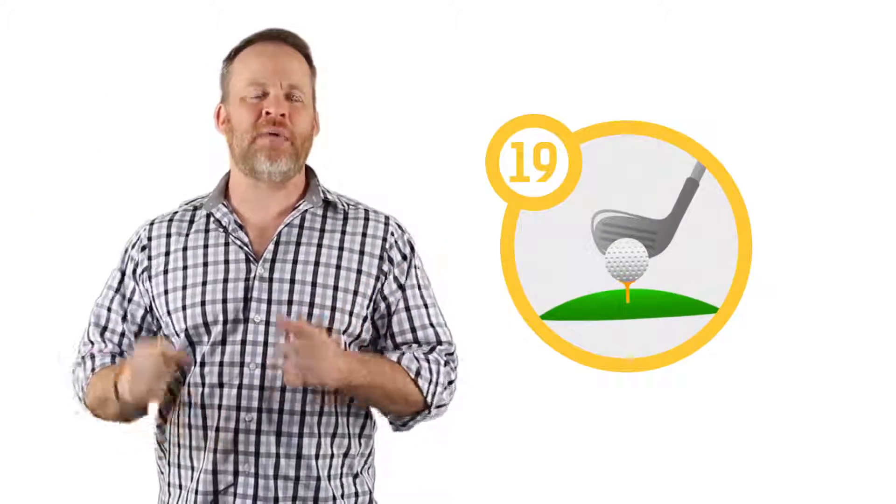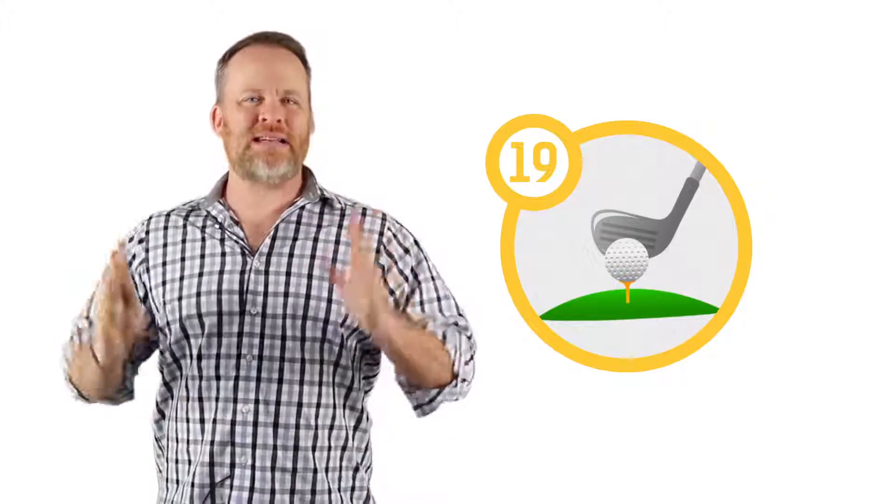So nineteen I used golf clubs because there are eighteen holes on a golf course but the nineteenth hole is where you go to get your lemonade or hang out after the game. Nineteenth hole. Nineteen is golf clubs. And number twenty I used fingers and toes. Ten fingers, ten toes, twenty fingers and toes.